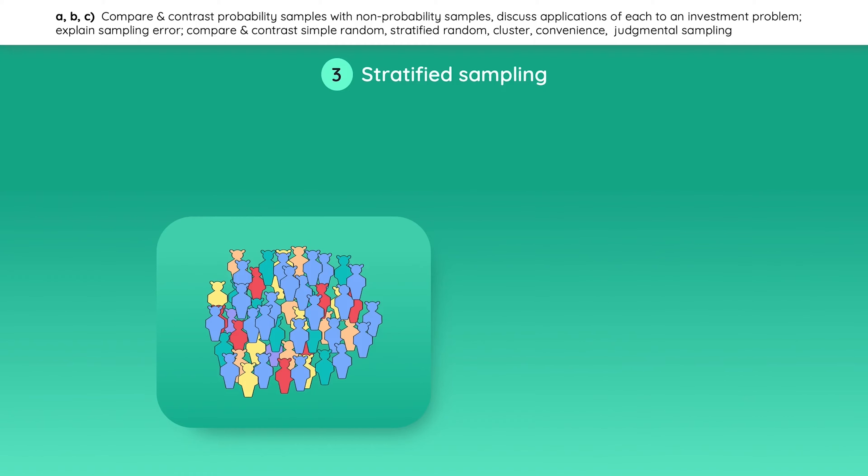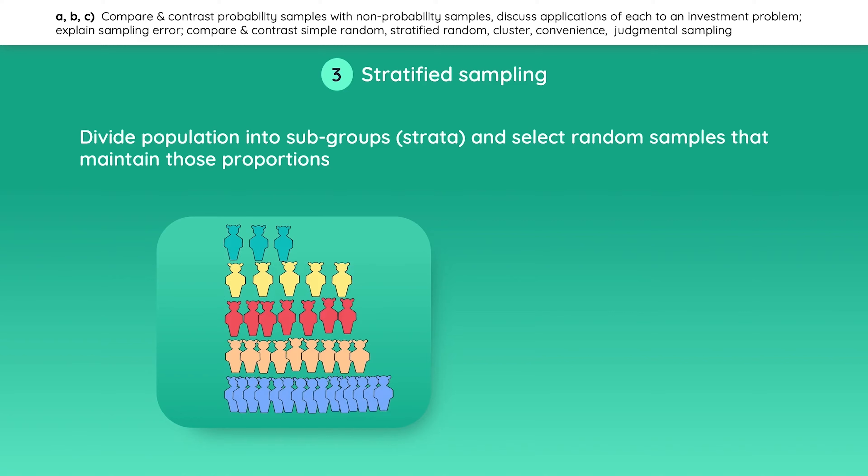In stratified random sampling, you divide the population into subgroups according to some criteria and then take simple random samples that maintain the proportions of those subgroups. For example, you could divide the population by color and then select a random sample that maintains the proportions of those subgroups.